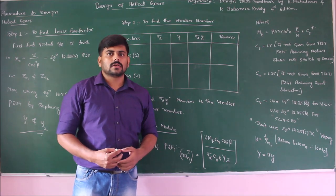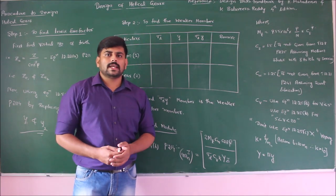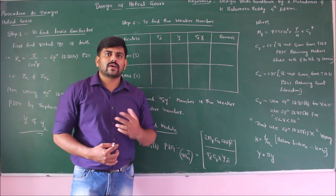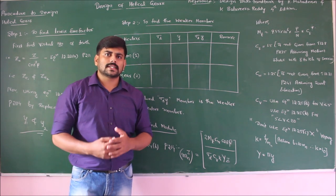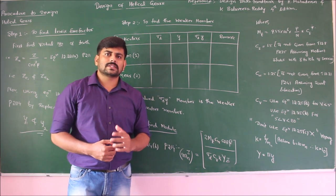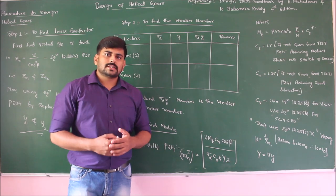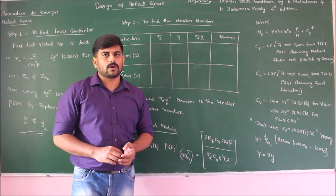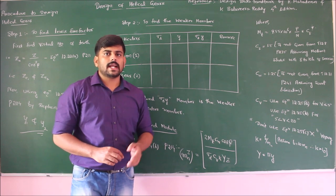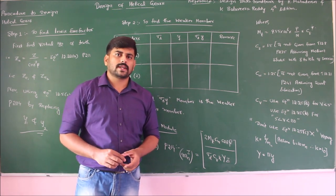By knowing these values and substituting into the equation, we can find the required value of mn³·Cv or mn²·Y. Then, using the trial and error method as followed in spur gear design, find mn³·Cv or mn²·Y, and adopt a module value such that the adopted value is greater than the required value. Once the adopted value is greater than the required value, adopt the module for the problem.